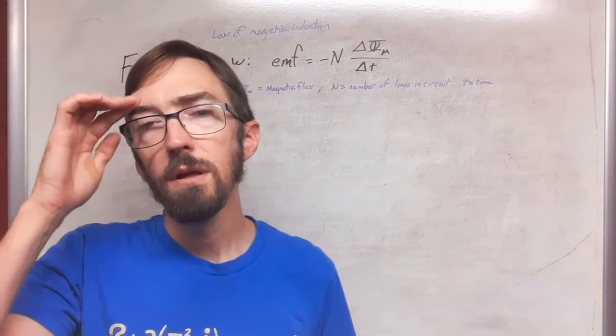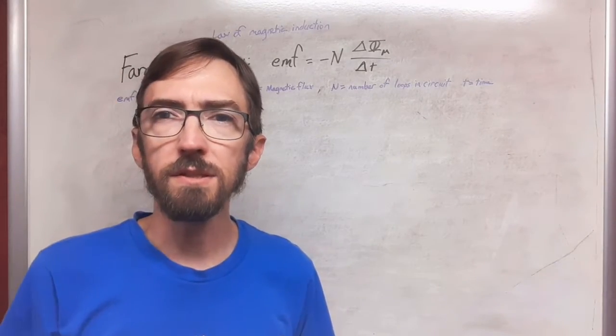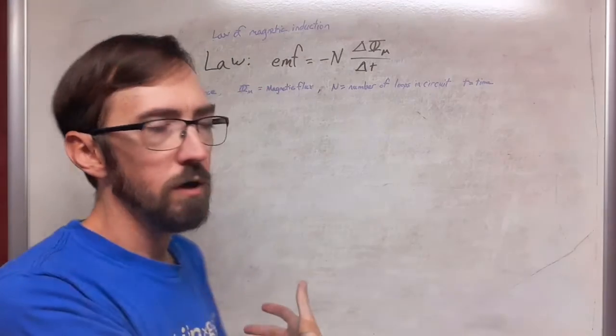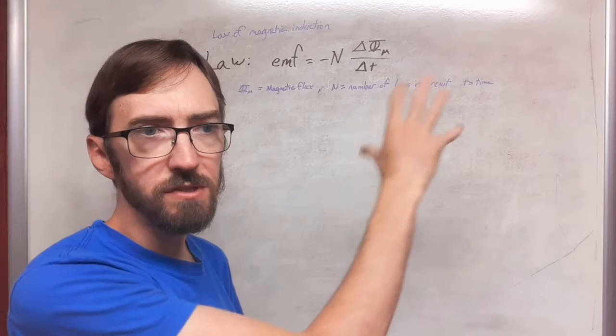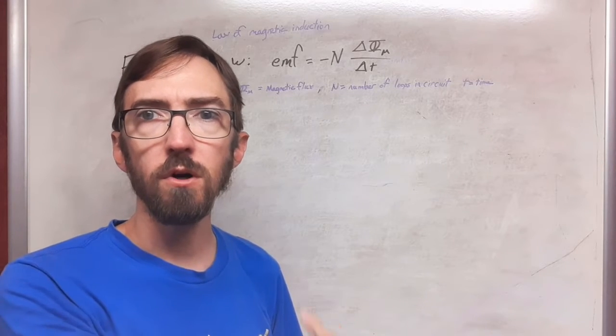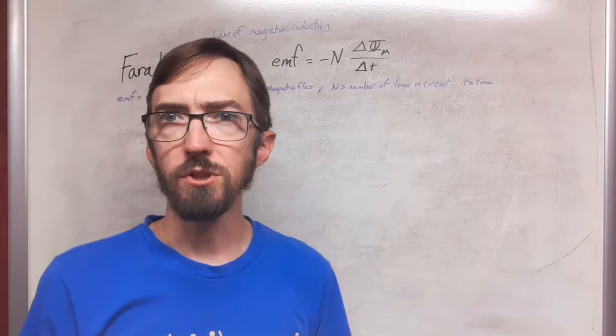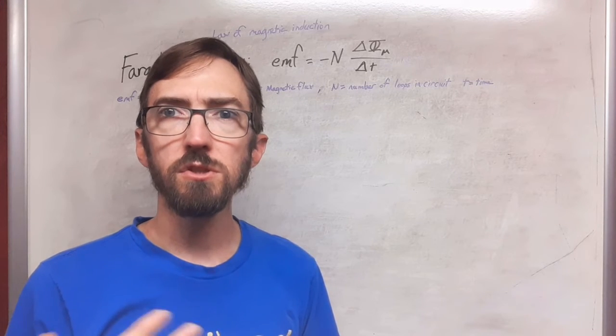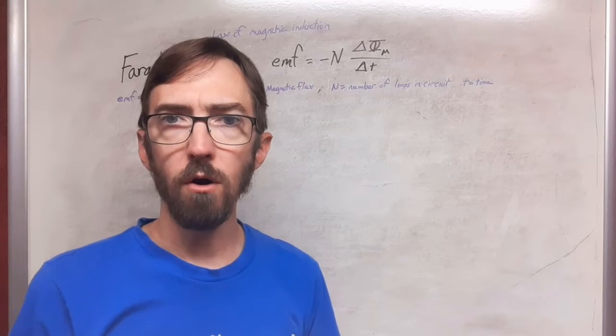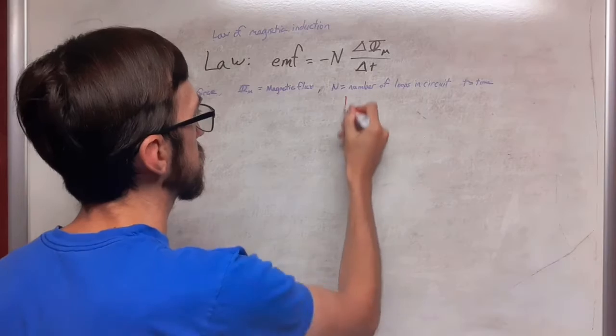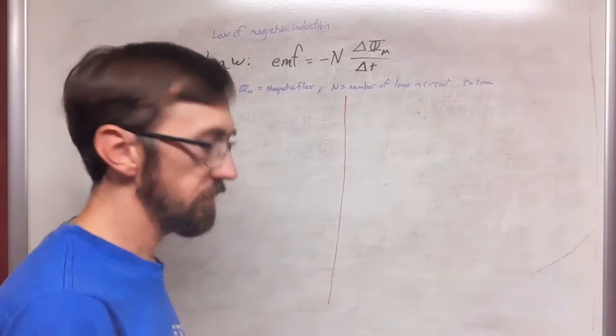I'm going to divide my board into two pieces and I'm going to have the main flow of the derivation on one side and some of the justification and side work on the other. It's going to look similar to a two column proof for high school geometry, just so that I can show all the logic and the flow behind what's going on here.